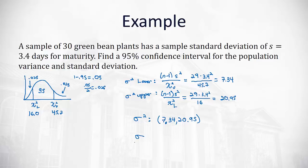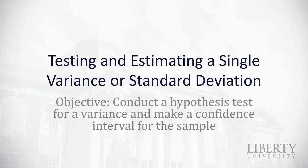To convert to sigma, we take the square roots of both limits. The square root of 7.34 gives a lower limit of 2.71, and the square root of 20.95 gives an upper limit of 4.58. So we are 95% confident the true standard deviation of the population falls between 2.71 and 4.58. Hopefully this video was helpful for conducting a hypothesis test for a variance and making a confidence interval.